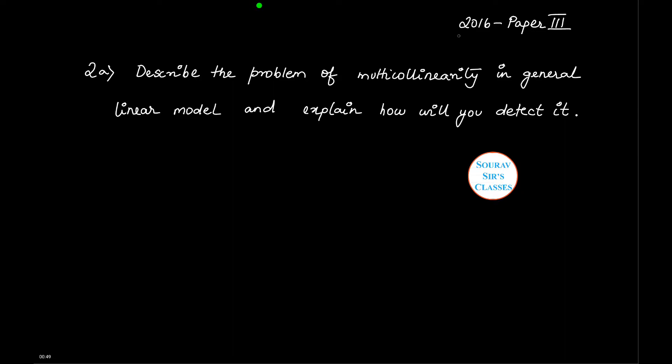In today's tutorial, the question has been picked from the year 2016, paper 3, and the question number is 2a. The question reads as: describe the problem of multicollinearity in general linear model and explain how you will detect it. This is a 10 mark question divided into two parts.